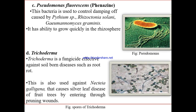Pseudomonas fluorescens produces phenazine. This bacterium is used to control damping-off caused by Pythium, Rhizoctonia solani, and Gaeumannomyces graminis. These three fungi can cause diseases in plants, and Pseudomonas fluorescens can be used to stop their growth.